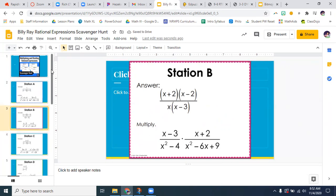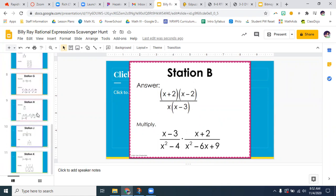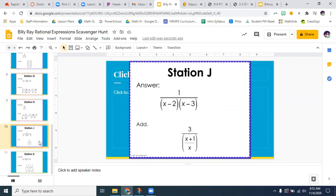All right. So for example, let's say you get down here to get an easy one. Here's an easy one. Station J.